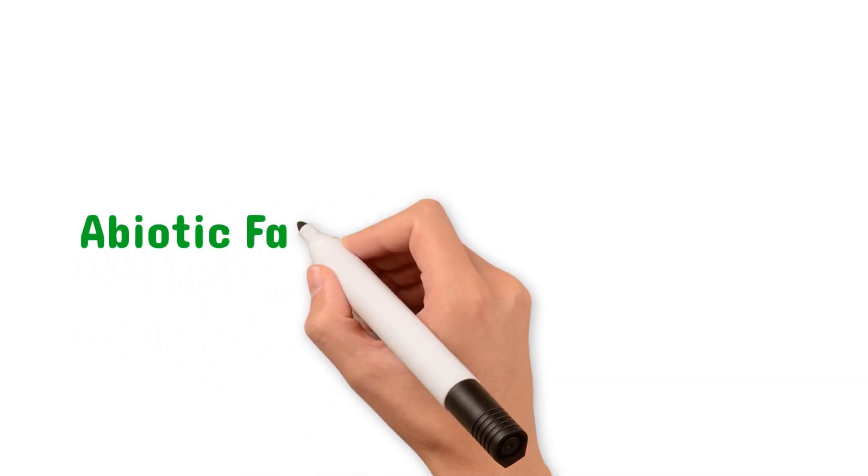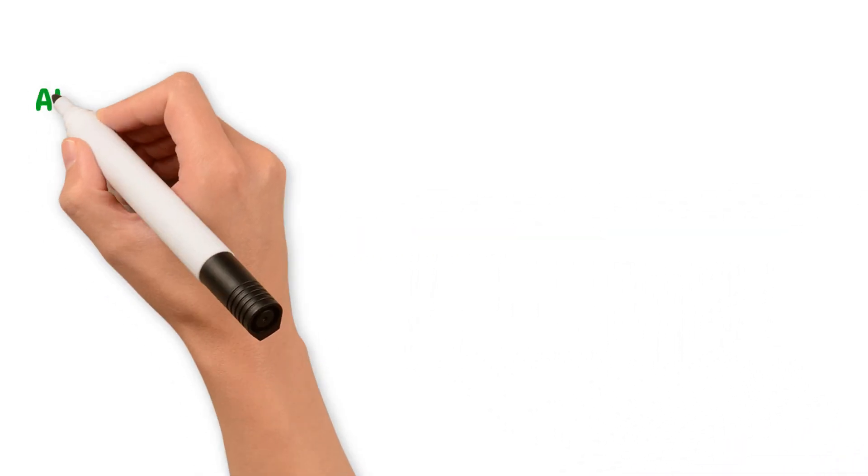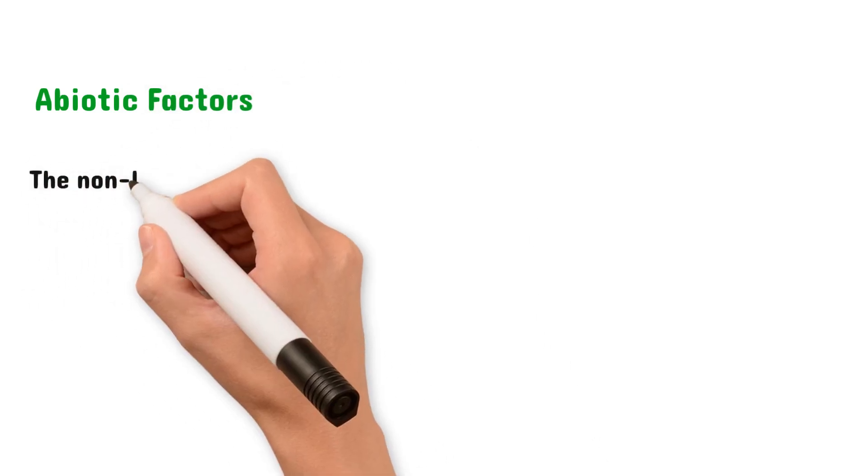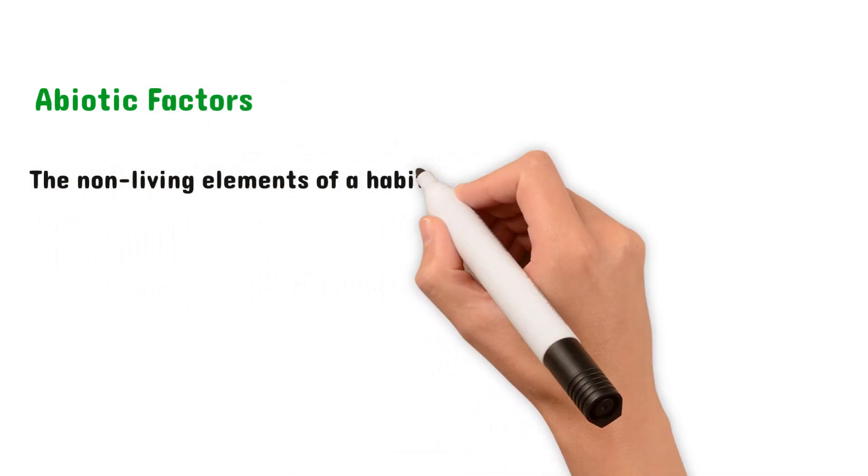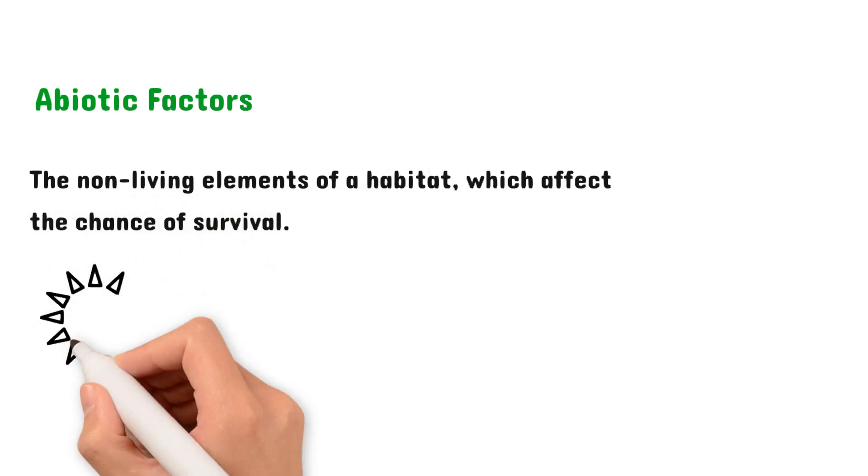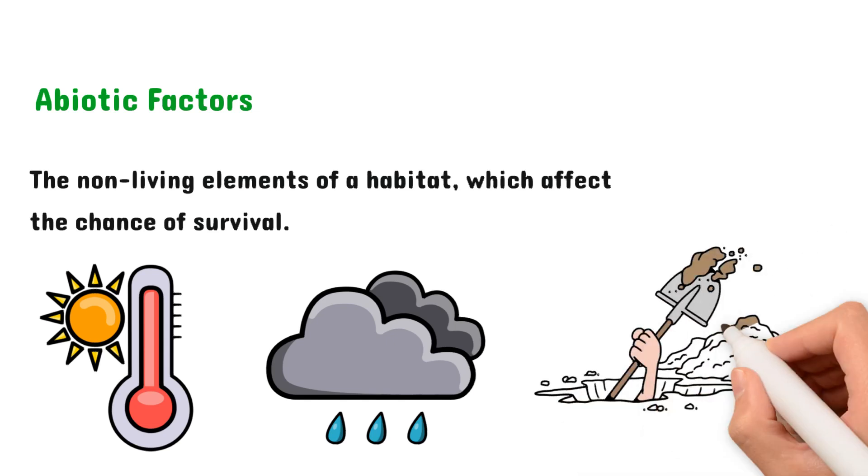Now let's move on to looking at the difference between abiotic factors and biotic factors. Let's start by looking at abiotic factors. These are the non-living elements of a habitat which affect the chance of survival for an organism. So for example, we have sunlight and temperature, rainfall, and even edaphic factors, which are the properties of the soil.